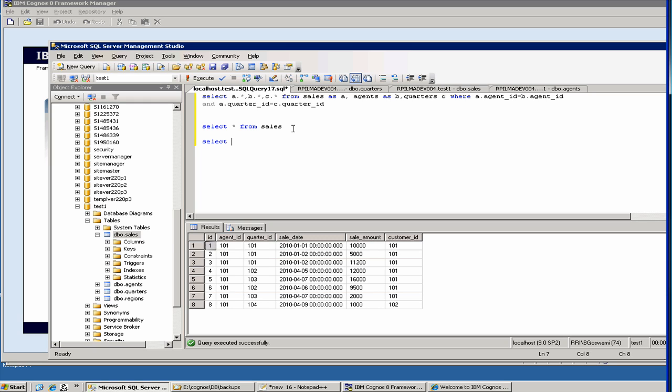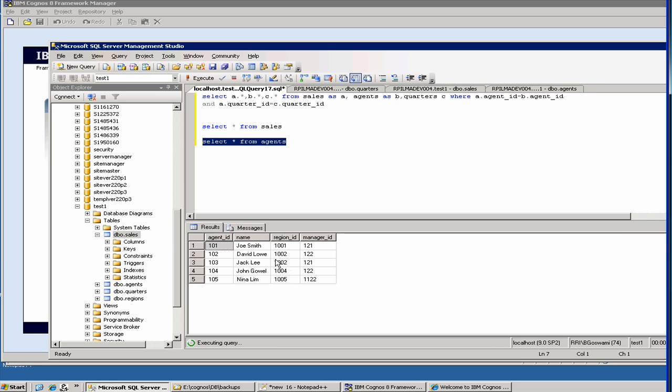And then our agent table is, select star from agents, and this will give you our agents. We've got three, four agents. And these are, again, sample test data, which I generated to show you the models.